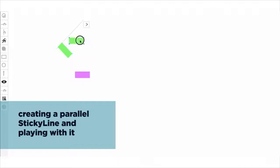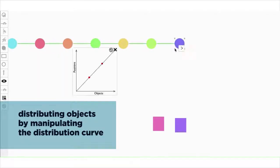Users can create parallel sticky lines to keep objects parallel, at any angle. They can also control the distribution curve.